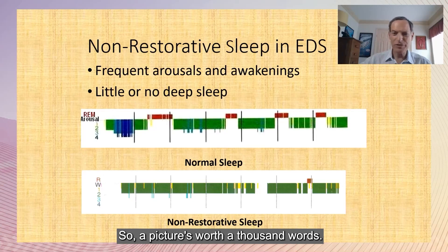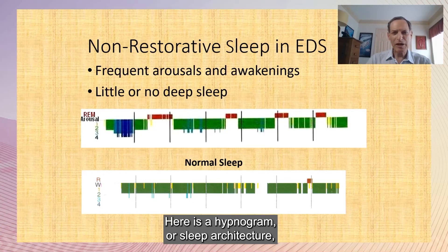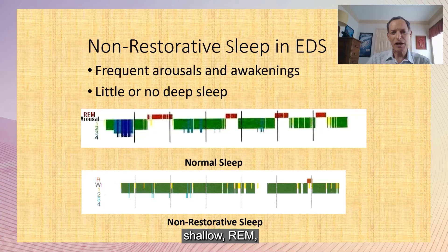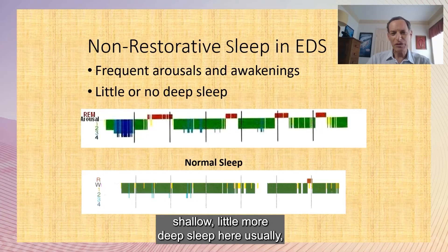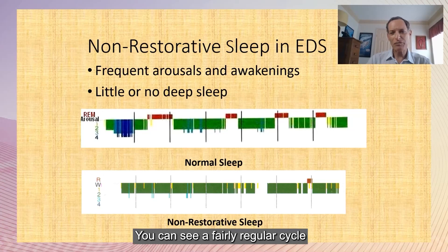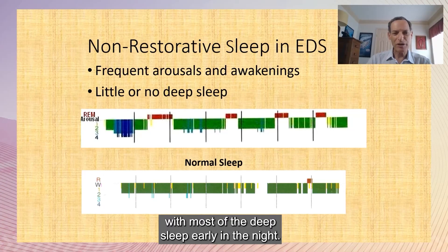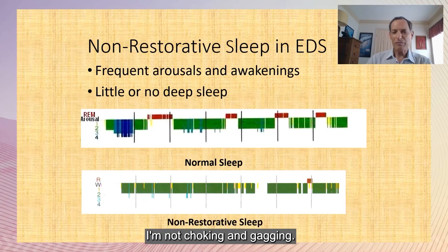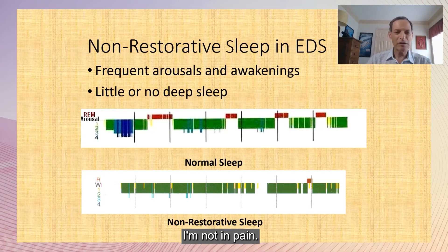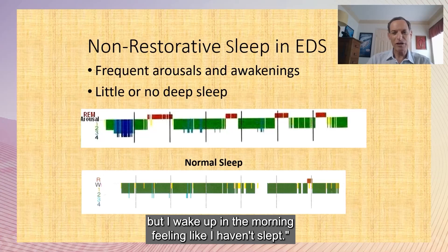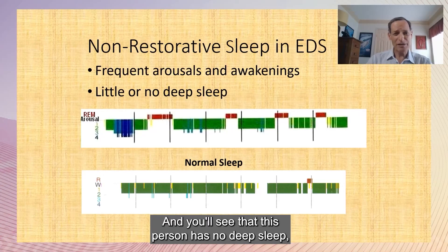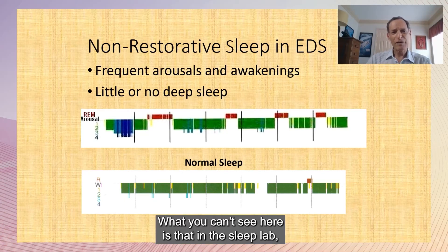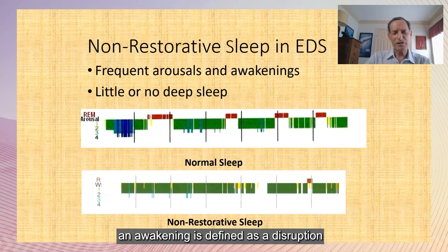Here is a hypnogram showing sleep architecture and how sleep cycles through the night. Normally there's light sleep, deep sleep, shallow REM, with most deep sleep early in the night. A very typical pattern for someone with Ehlers-Danlos who says they sleep all night, aren't snoring, aren't in pain, aren't thrashing around — but wake up feeling like they haven't slept — shows no deep sleep, almost no REM, and nothing that looks like a cycle.